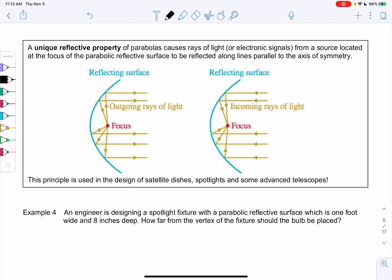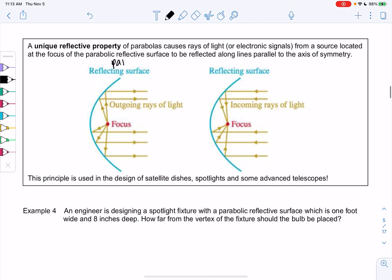From a source located at the focus of a parabolic reflective surface. So that just means something that makes a parabola shape. And then to be reflected along lines parallel to the axis of symmetry.